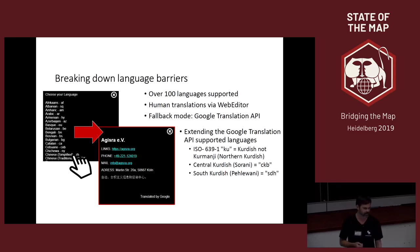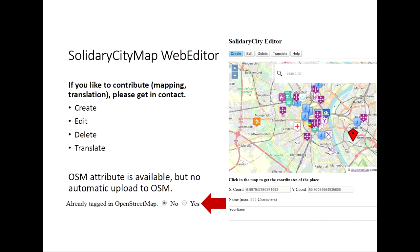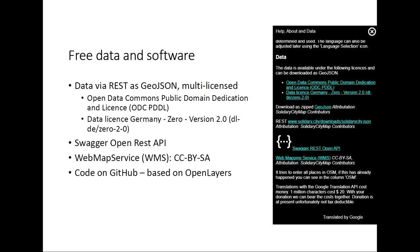A friend of mine is a native Sorani-speaking Kurd, so most of the translations of the database are now in Sorani. The web editor on the right side lets you create places, edit them, or delete them and do translations. Besides attributes like wheelchair accessibility, there is also an attribute indicating if a place is already mapped in OpenStreetMap or not. The data is served via a REST endpoint as GeoJSON and multi-language for maximum possible users. We have the Swagger OpenREST API, a web mapping service, and all the code is on GitHub based on OpenLayers. Thanks a lot for your attention, and I hope for contributions.